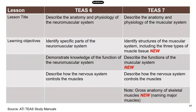You need to identify the different structures of the muscular system, including the three types of muscle tissues — especially which one is voluntary and which one is involuntary. And the second objective is to describe the functions of the muscular system.